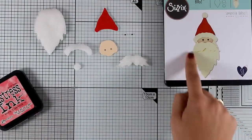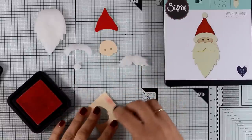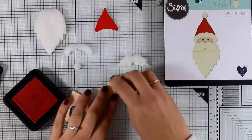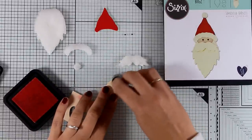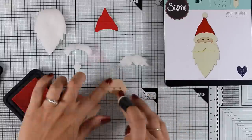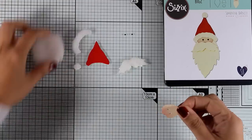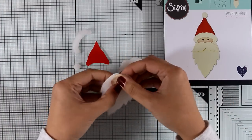Now before I start assembling my little Santa, I'm going to add some pink on his cheeks. For that I'm just using my Distress Ink there with a finger dabber. Now I'm going to start doing the assembly of my Santa. For sticking all the pieces together I'm using white glue.